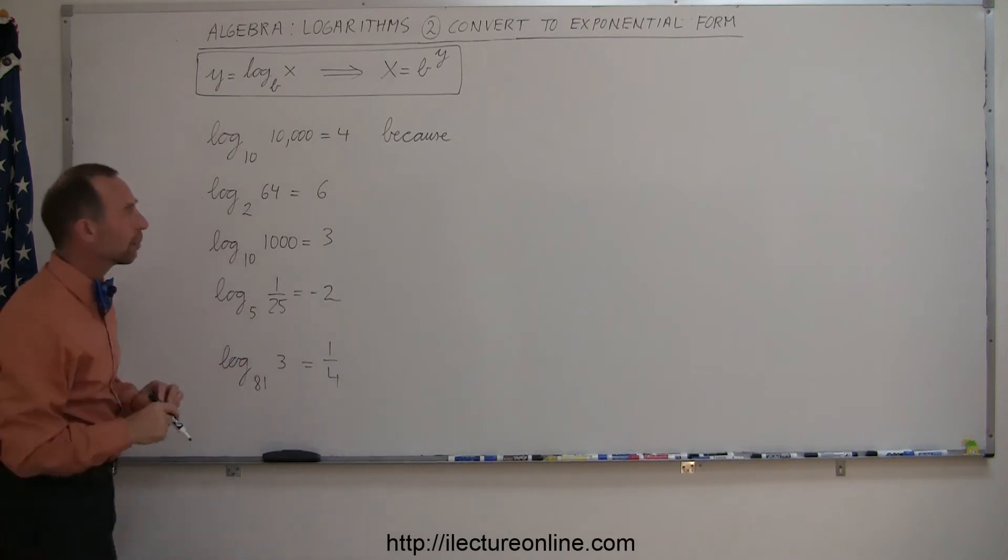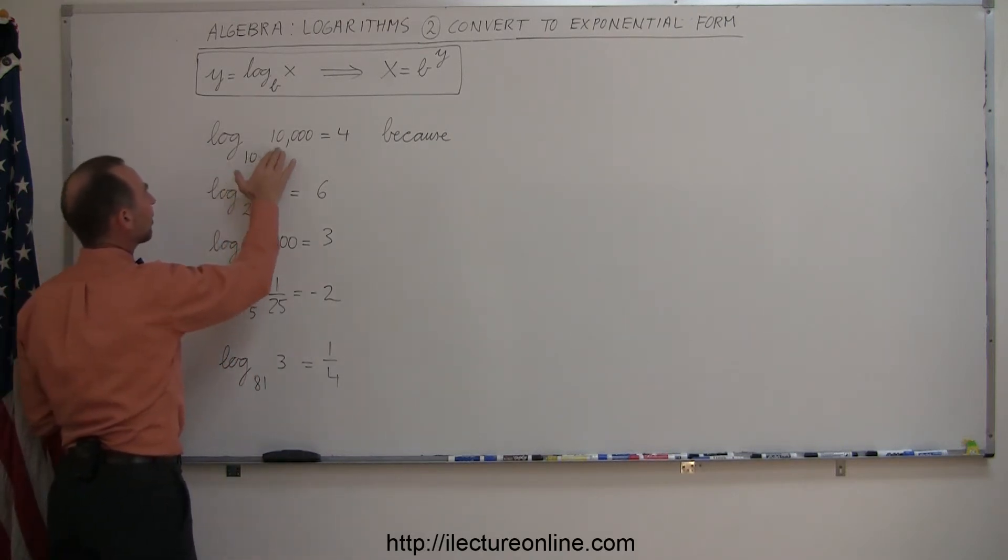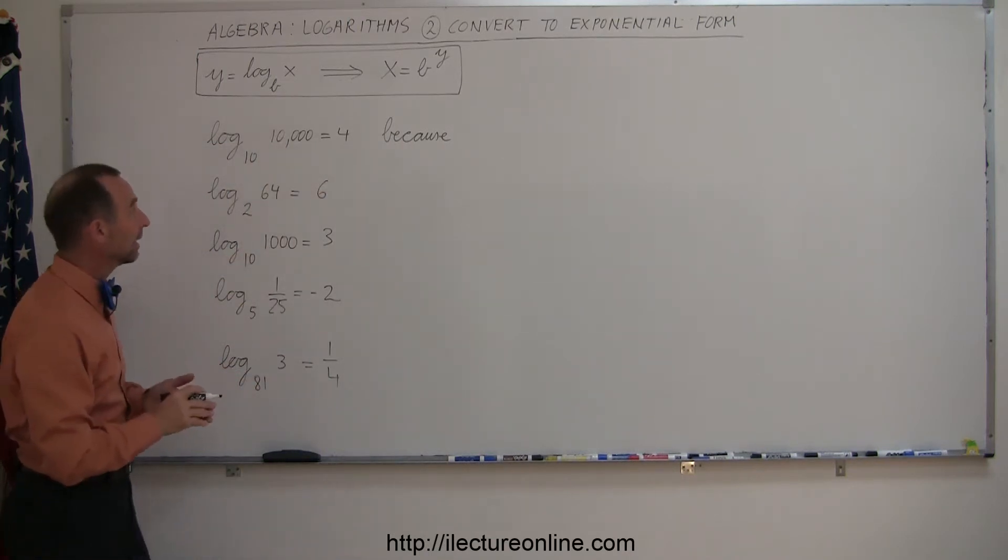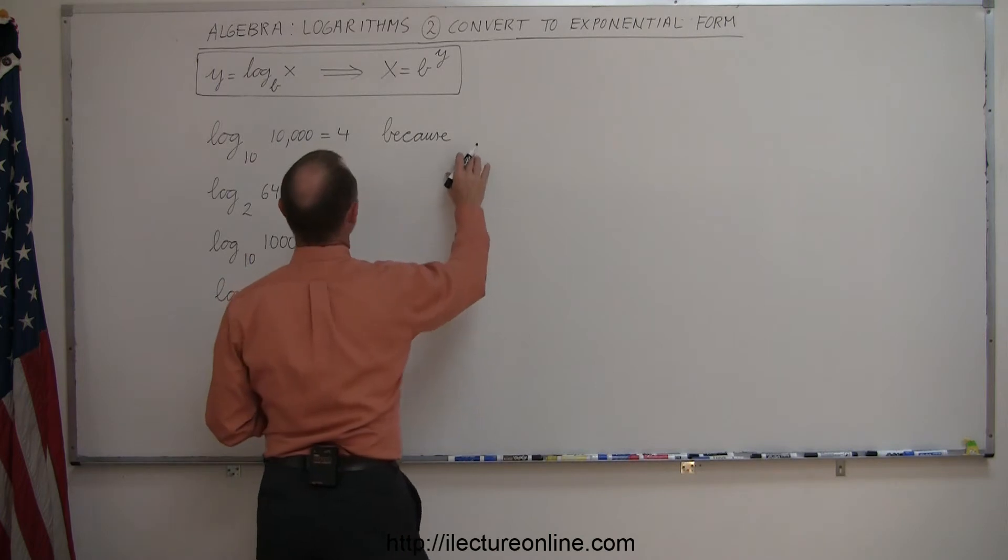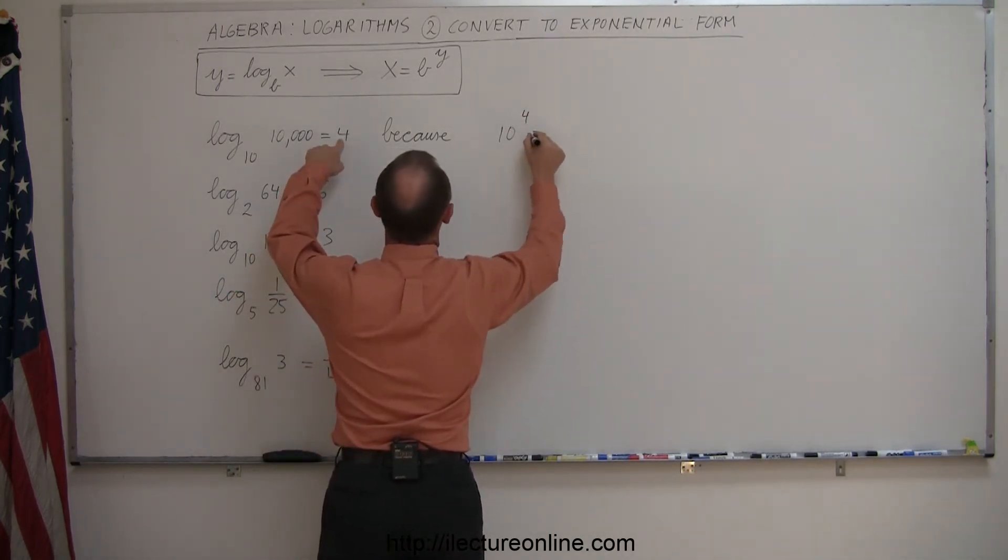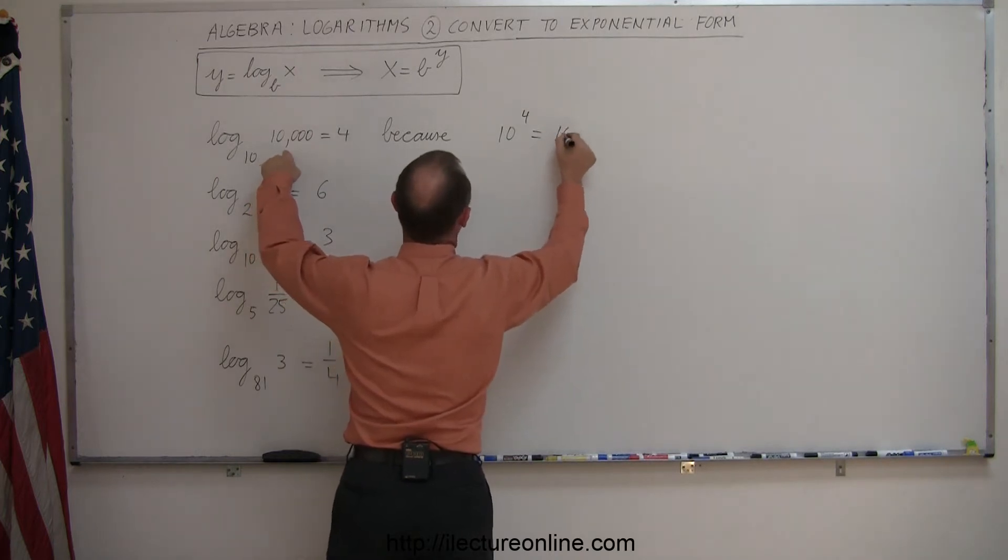To give you an example of what we're trying to do here, let's say we have the log to the base 10 of 10,000 and we claim that's equal to 4. The reason why we can say that is because we can take the base and raise it to the 4th power and we should get back what this is equal to, 10,000.